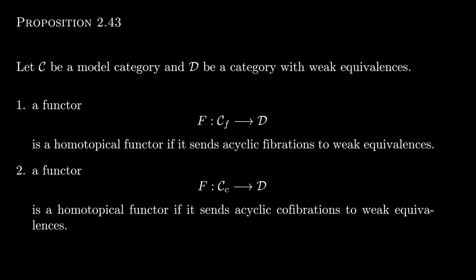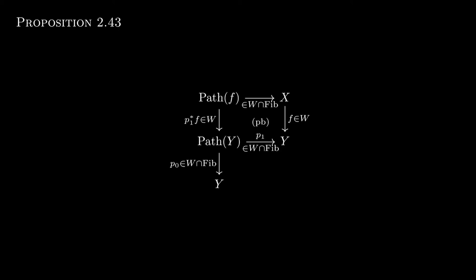Consider the following diagram for a choice of path space object. P0 and P1 on the bottom are acyclic fibrations, following from the factorization of the diagonal. F is a weak equivalence by assumption. The top left vertical morphism is a weak equivalence due to the factorization lemma. The composite vertical morphism factors F through a weak equivalence, and since it is a weak equivalence, P1 composed with F is as well.